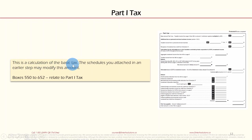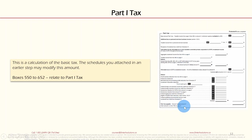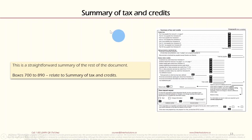Section 10 is Part One Tax — the calculation of the basic federal tax. The schedules attached in earlier steps may modify this amount. Boxes 550 to 652 relate to Part One Tax. This section shows the Part One tax payable, including investment income, small business deductions, federal tax abatement, and deductions for manufacturing and processing (M&P) if applicable.